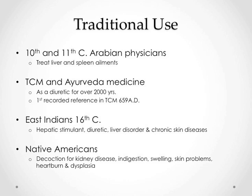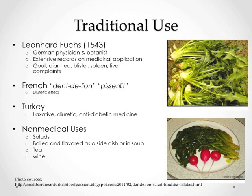Native Americans used dandelion decoctions to treat kidney disease, swelling, skin diseases, heartburn, and dyspepsia. German physician-botanist Leonhart Fuchs described extensive records of the medicinal applications of Taraxacum officinale in 1543 to treat gout, blisters, and liver complaints. The French have several names for the common dandelion, one of them being 'pissenlit,' which literally translates as 'piss in bed,' referring to the dandelion's diuretic effect. In Turkey, the herb was used as a laxative, diuretic, and diabetic medicine.